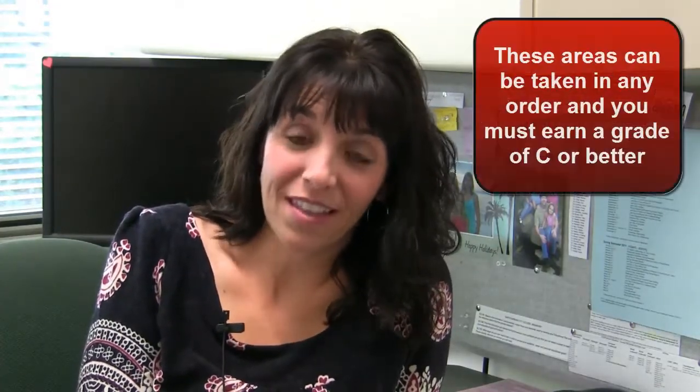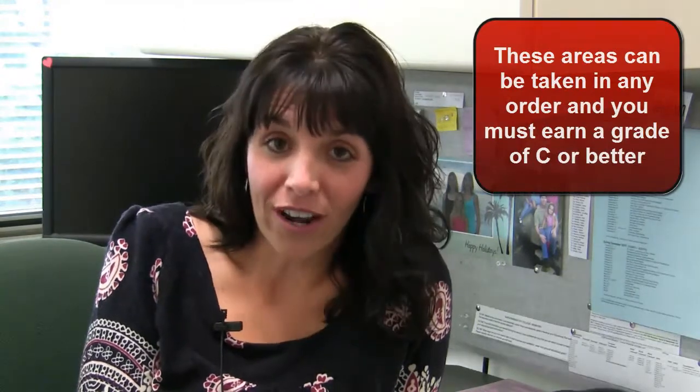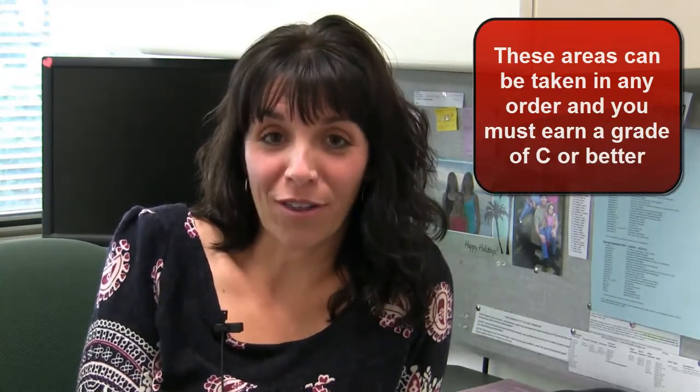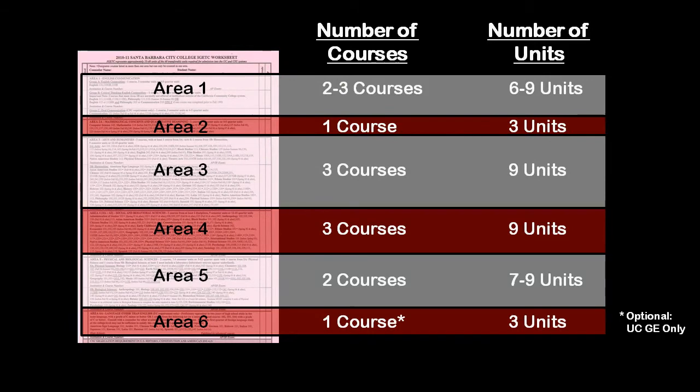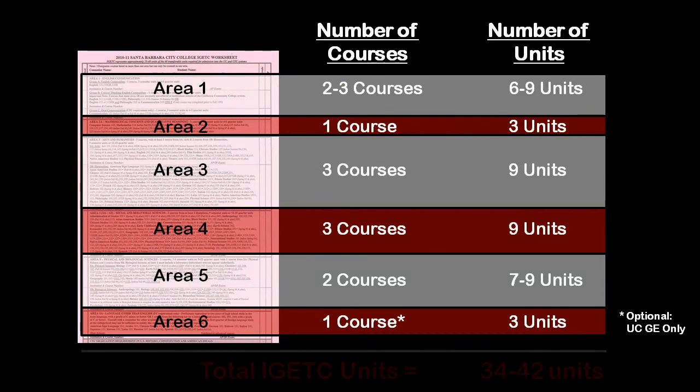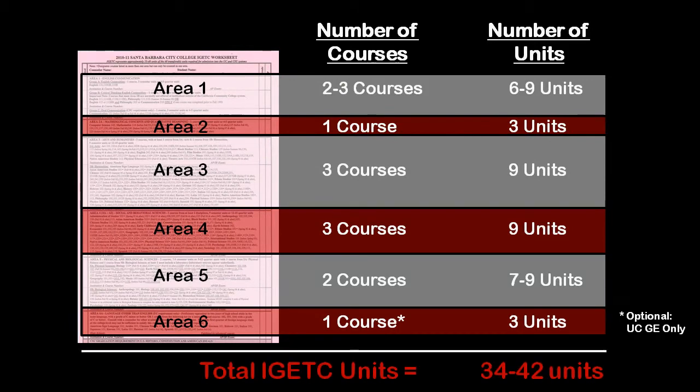As you can see, IGETC isn't as complicated as it may seem. These areas can be taken in any order, and you must earn a grade of C or better in the courses. Also, remember that in order to be eligible to transfer to a UC or a CSU, you will need to complete a total of 60 transferable units. Completing all the IGETC course requirements will total somewhere between 35 to 40 units, so that leaves you lots of room to take other courses in your major and electives.